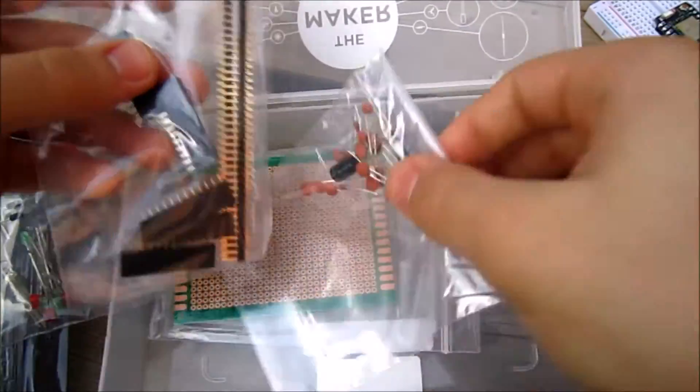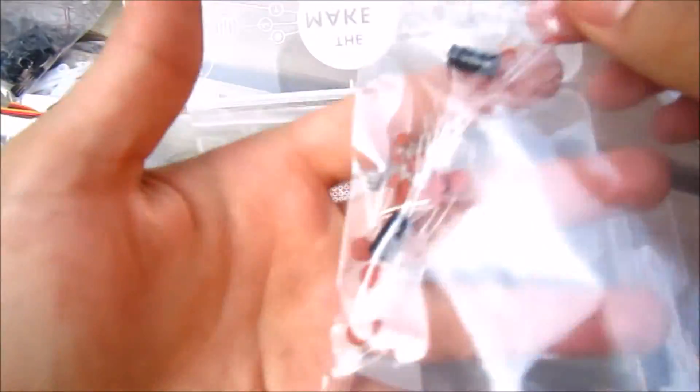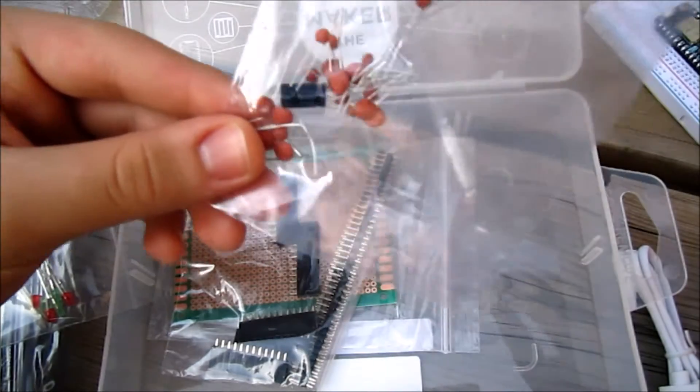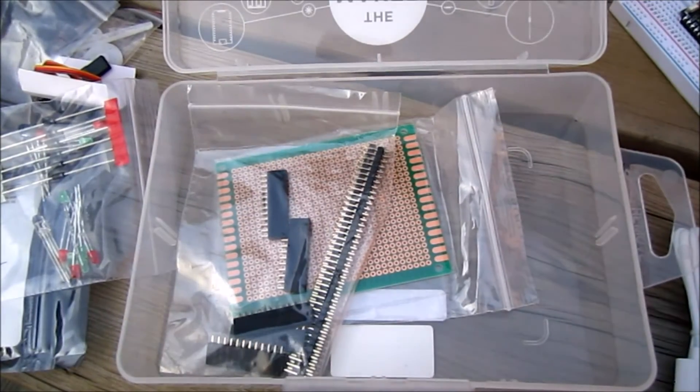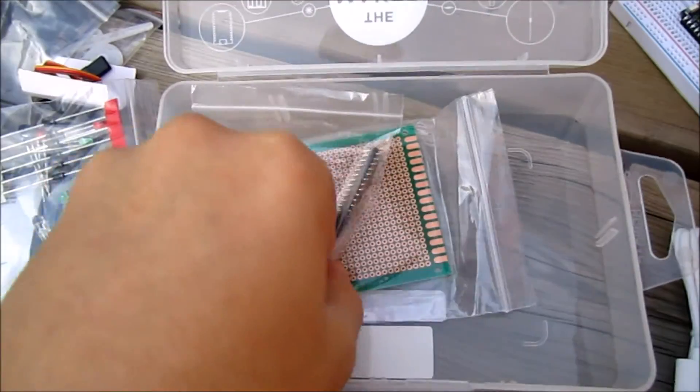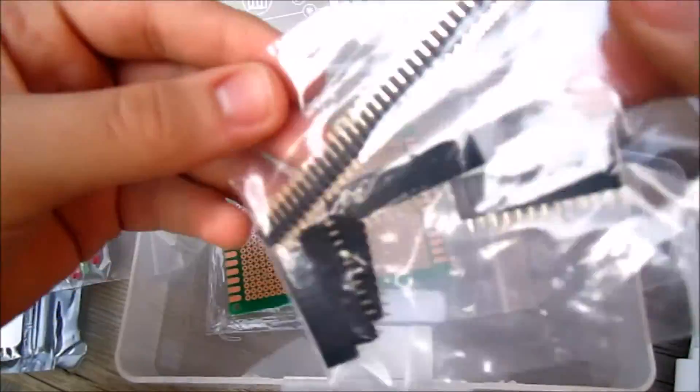Next up we have a bunch of capacitors in this little bag. It looks like we have two more things in the box. Next up we have headers.